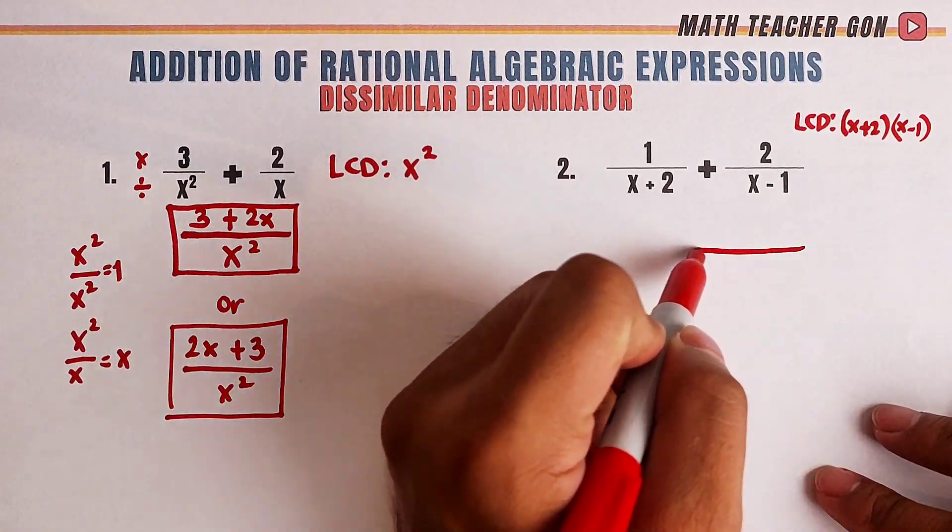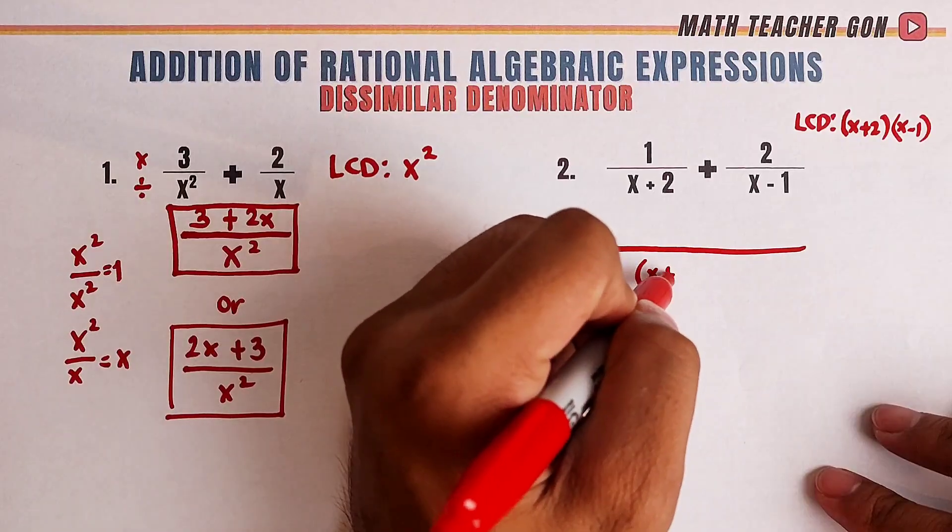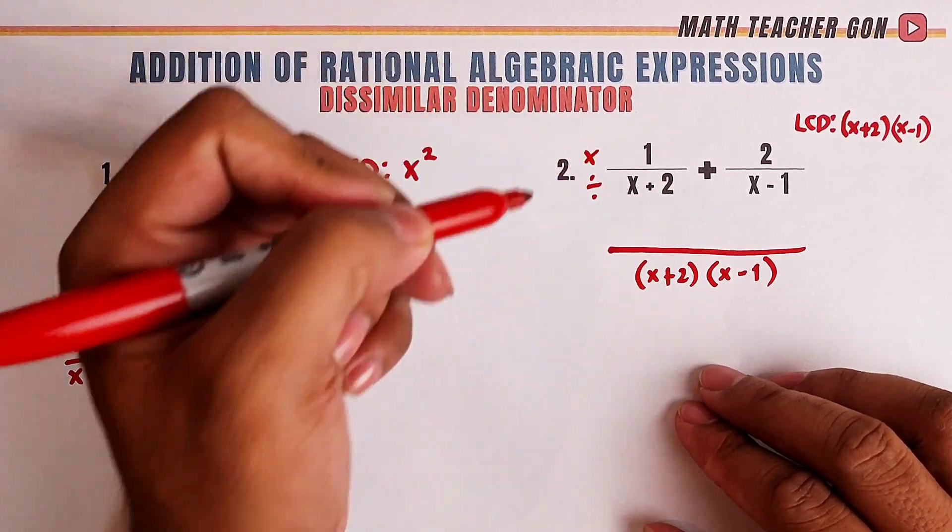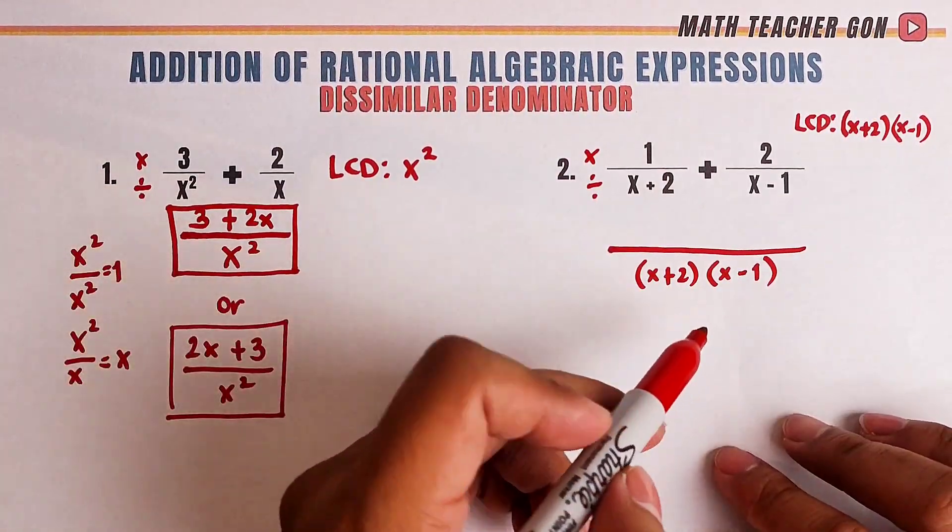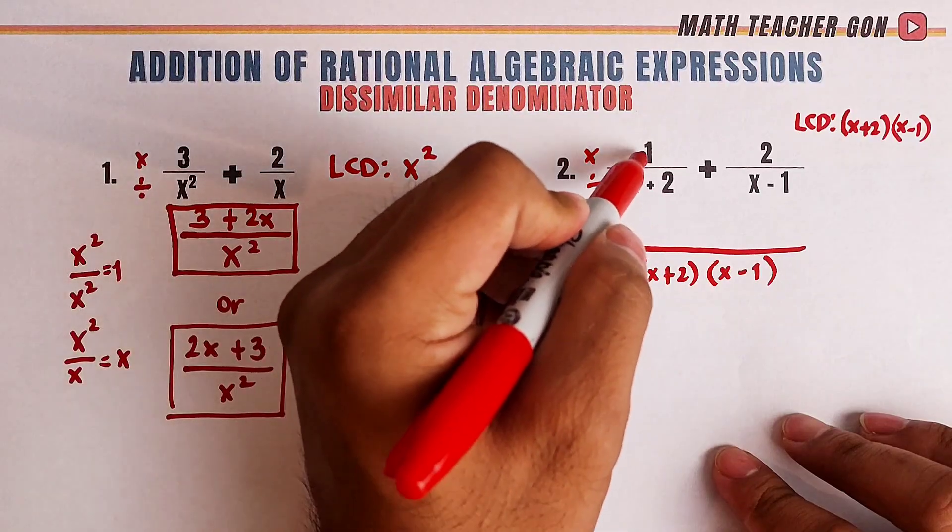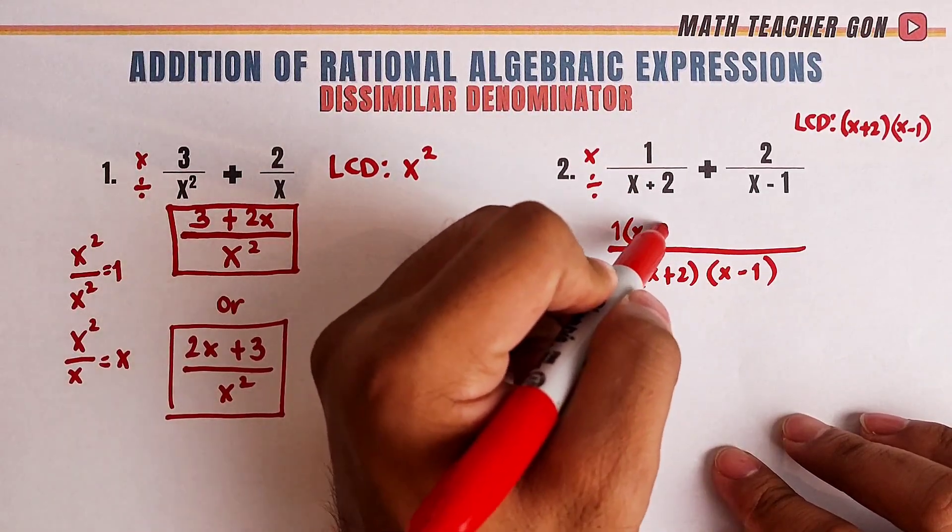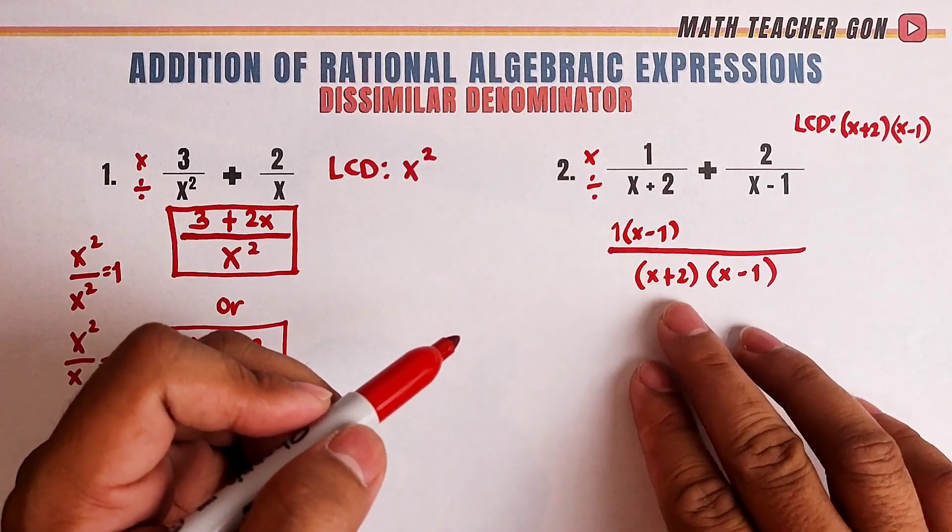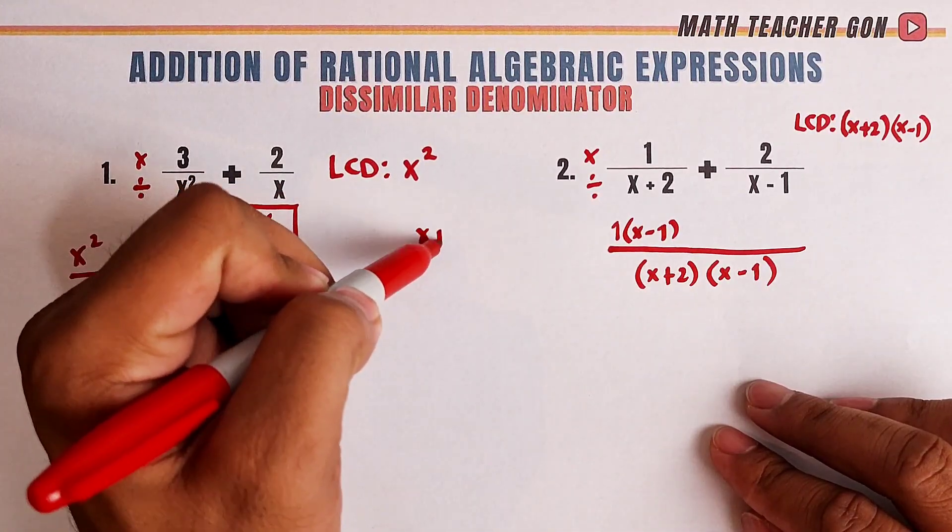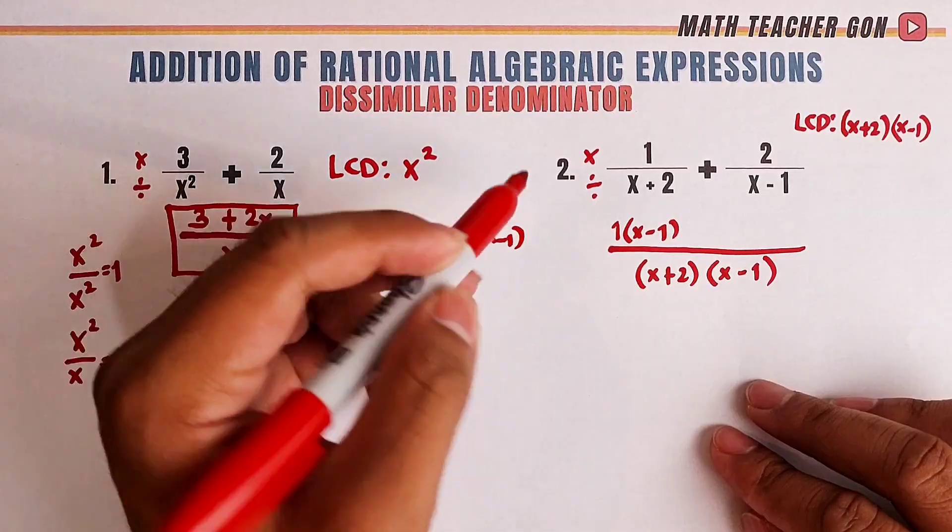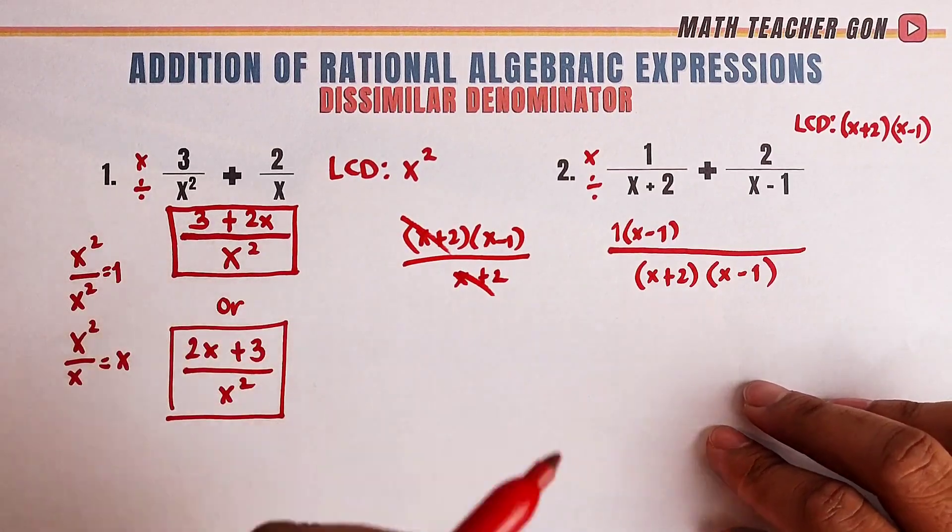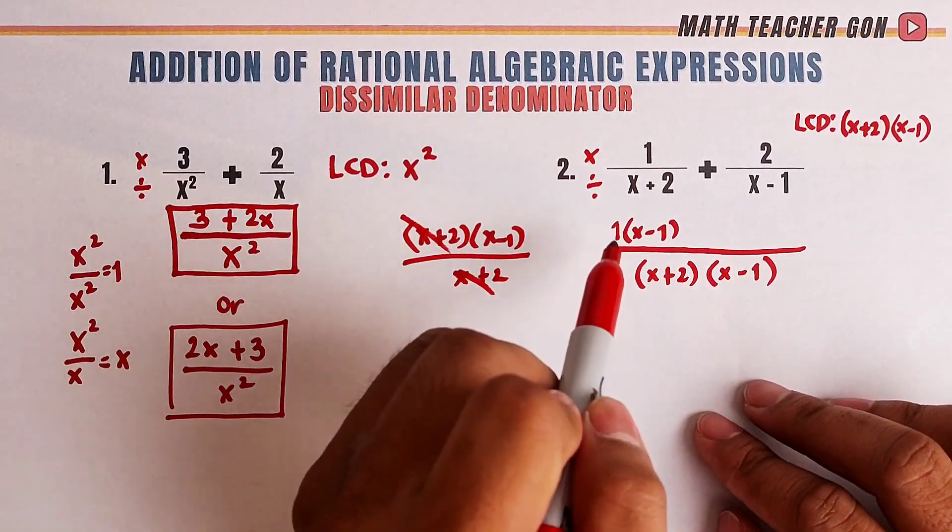And then, put it here. x plus 2 times x minus 1. So again, the process is divide multiply. Let's go. So, this LCD divided by x plus 2 will cancel. It will become 1 times x minus 1. How come? When we divide this, it will become x plus 2 times x minus 1 divided by x plus 2. These will cancel out. What remains is x minus 1 times 1. That would be 1 times x minus 1.